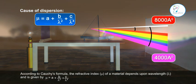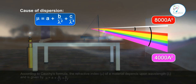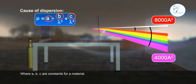According to Cauchy's formula, the refractive index μ of a material depends upon wavelength λ and is given by μ = a + b/λ² + c/λ⁴, where a, b, c are constants for a material.